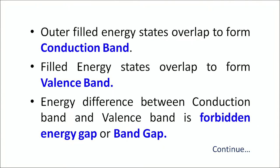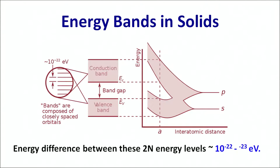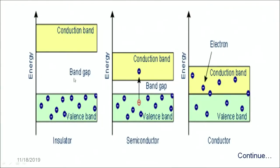The energy difference between the conduction band and the valence band is known as the forbidden energy gap or the band gap. It is this band gap which decides the conductivity of a given material. It is this formation of bands which ultimately decides the conductivity in a given solid structure. On the basis of the band gap, for insulators, there is a large band gap between the valence band and the conduction band.